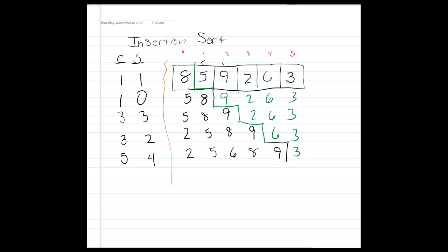At that point we have our fully sorted array: two, three, five, six, eight, and nine. The total number of comparisons was 1 + 1 + 3 + 3 + 5 = 13 comparisons, and there were 10 swaps in total.